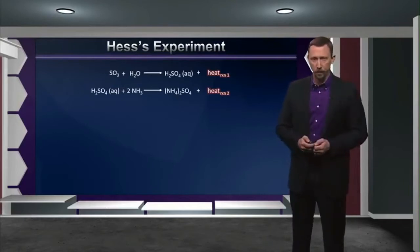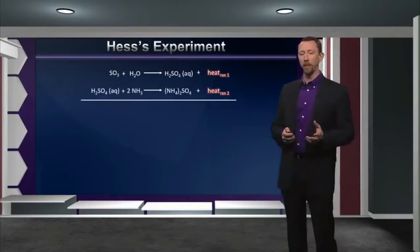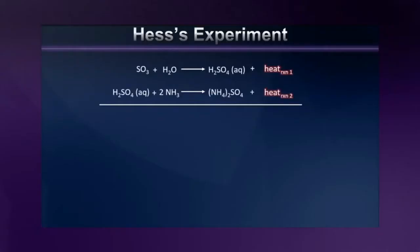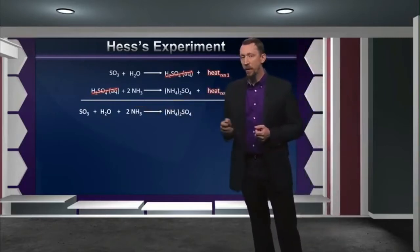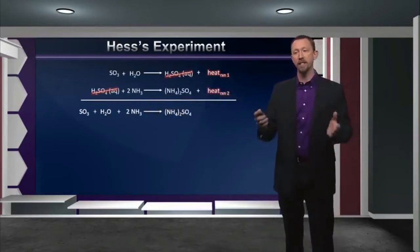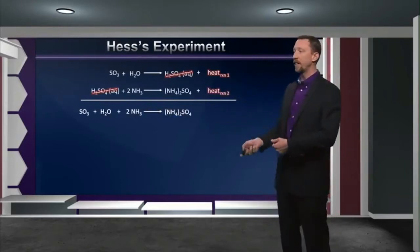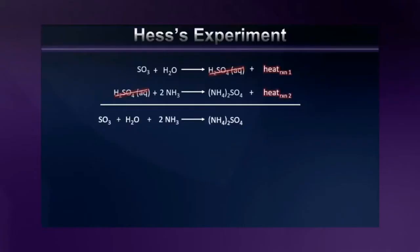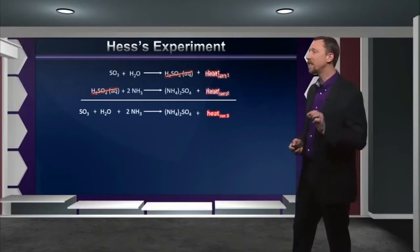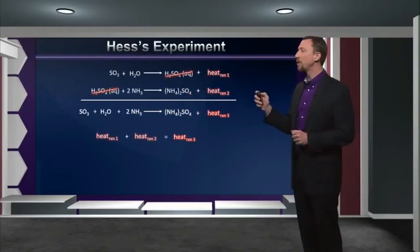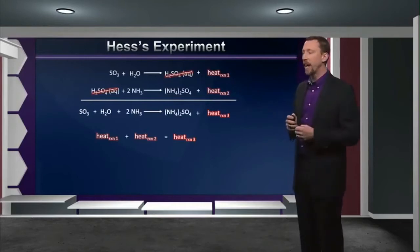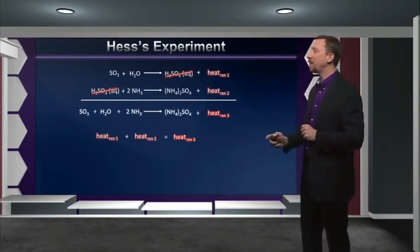So what did Hess do that was so different? Well, Hess decided instead of running these reactions separately, he would run them together in one pot. In other words, he would cancel out the sulfuric acids and run a reaction where he added sulfur trioxide to aqueous ammonia — water and ammonia — so that the process could happen all at once instead of in a stepwise fashion: first making the sulfuric acid, then adding it to the ammonia. What he found was that when he ran the reaction this way, a certain amount of heat was evolved — and what was really remarkable was that it was exactly the summation of the heats of the two processes.